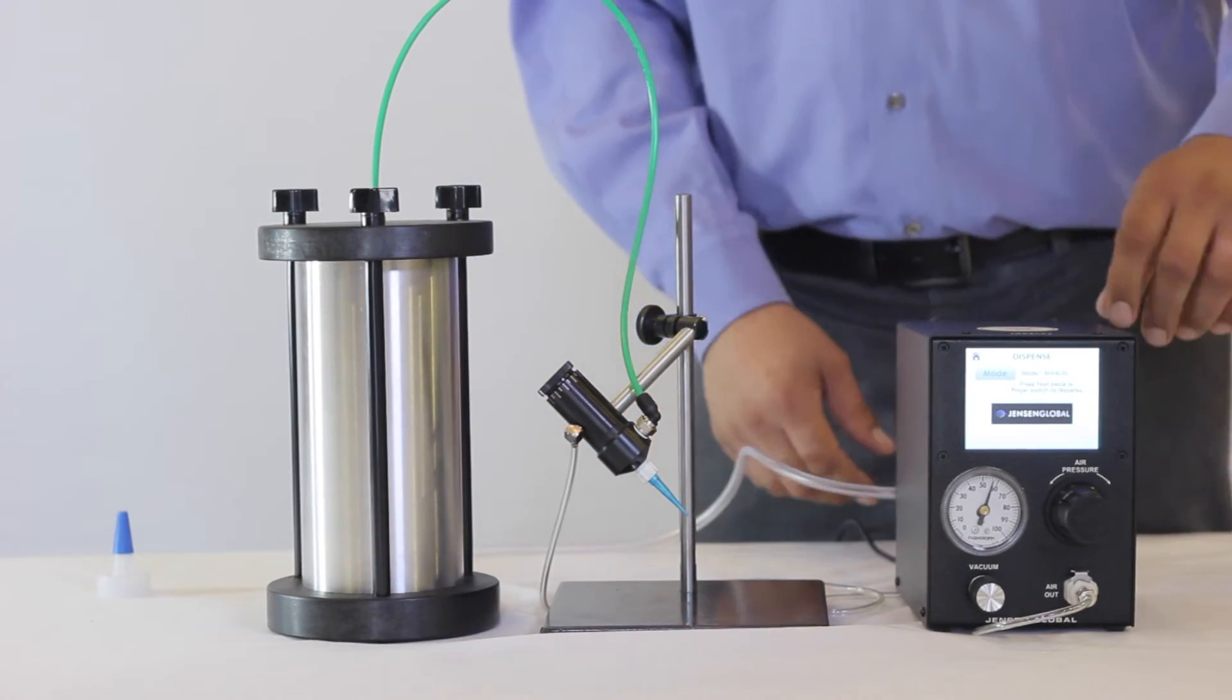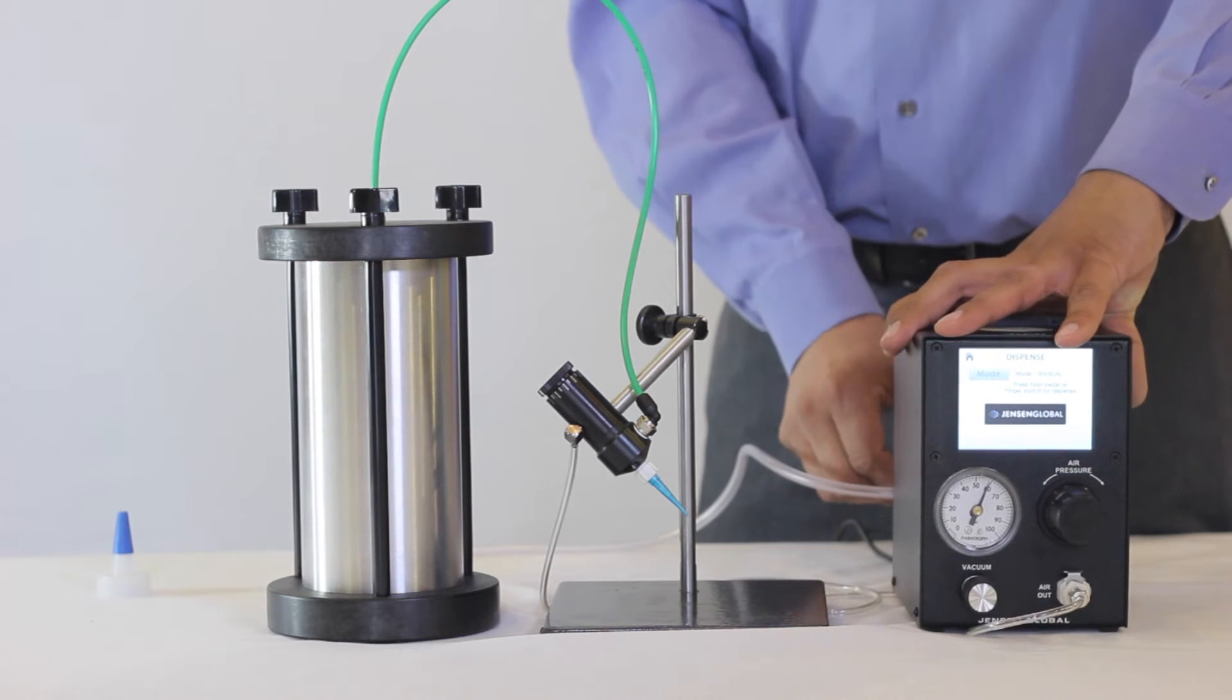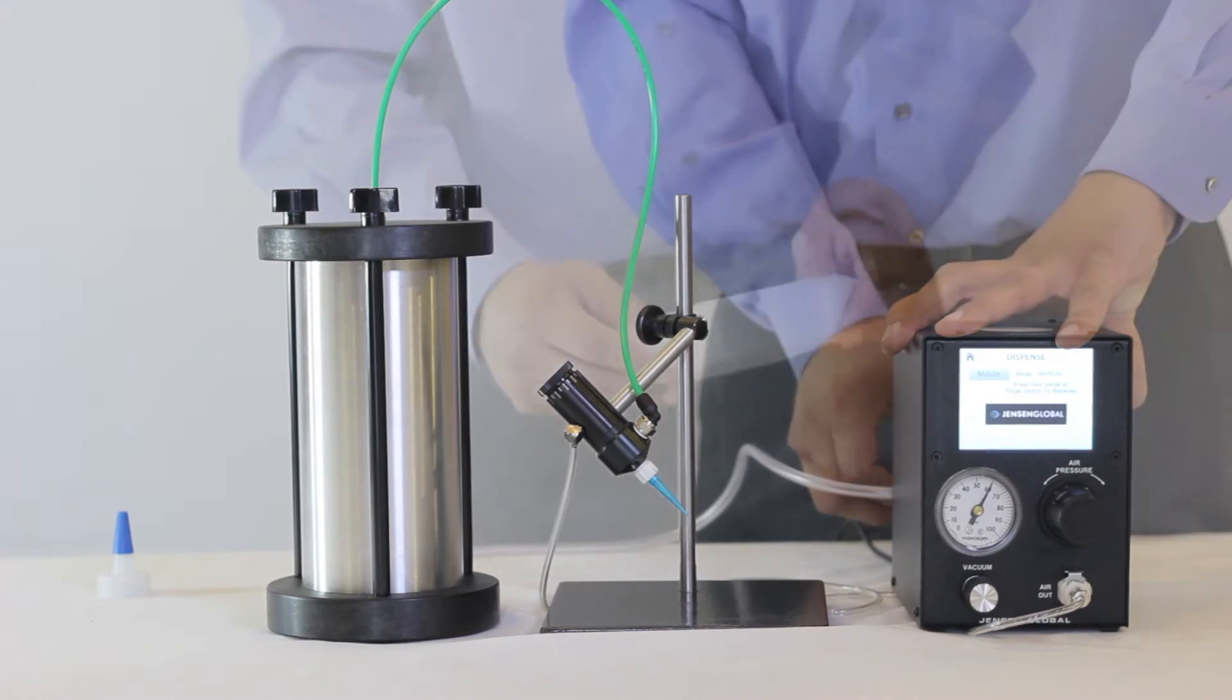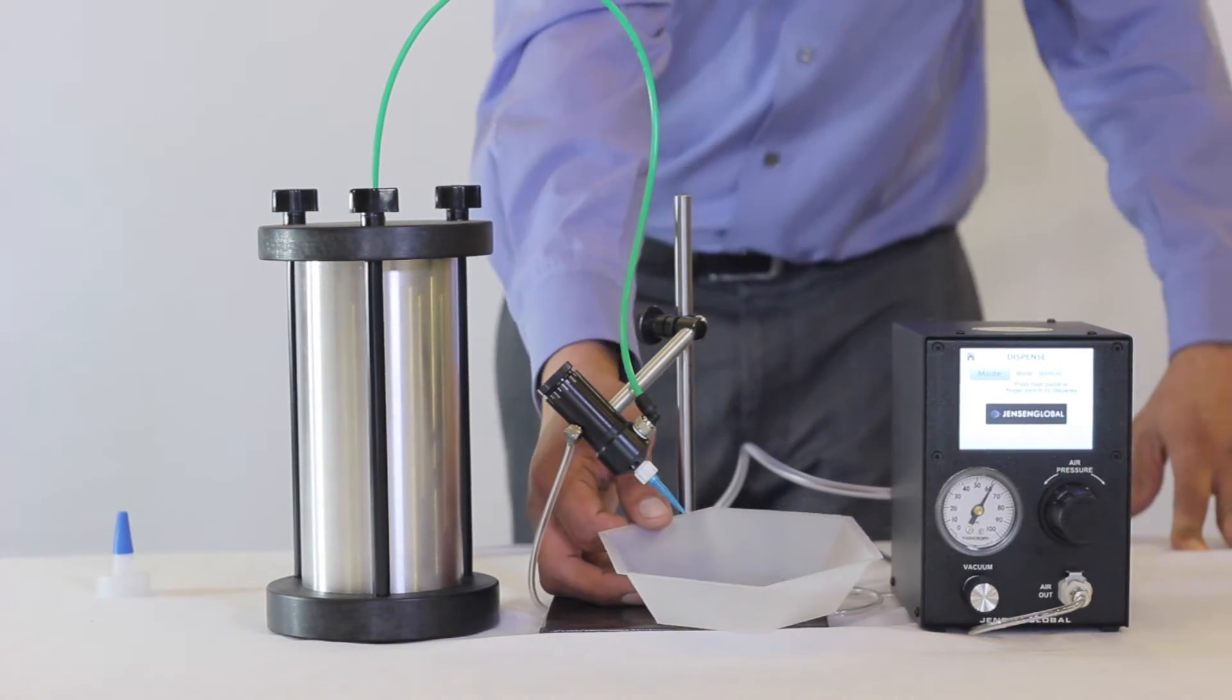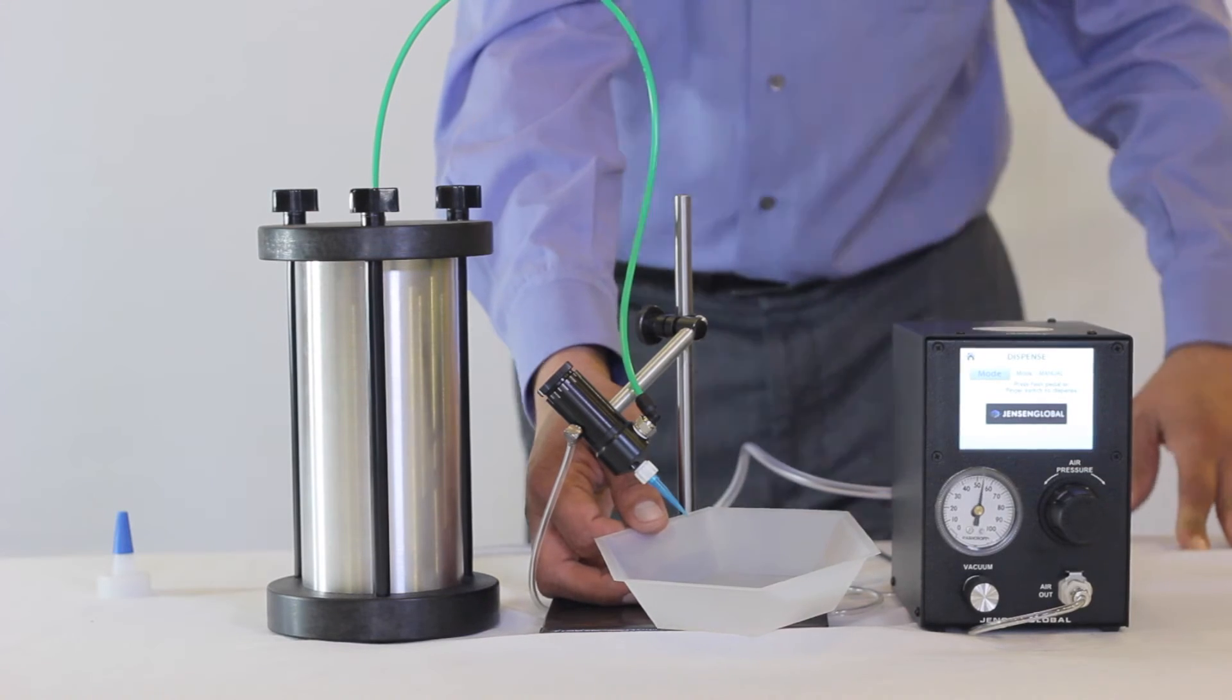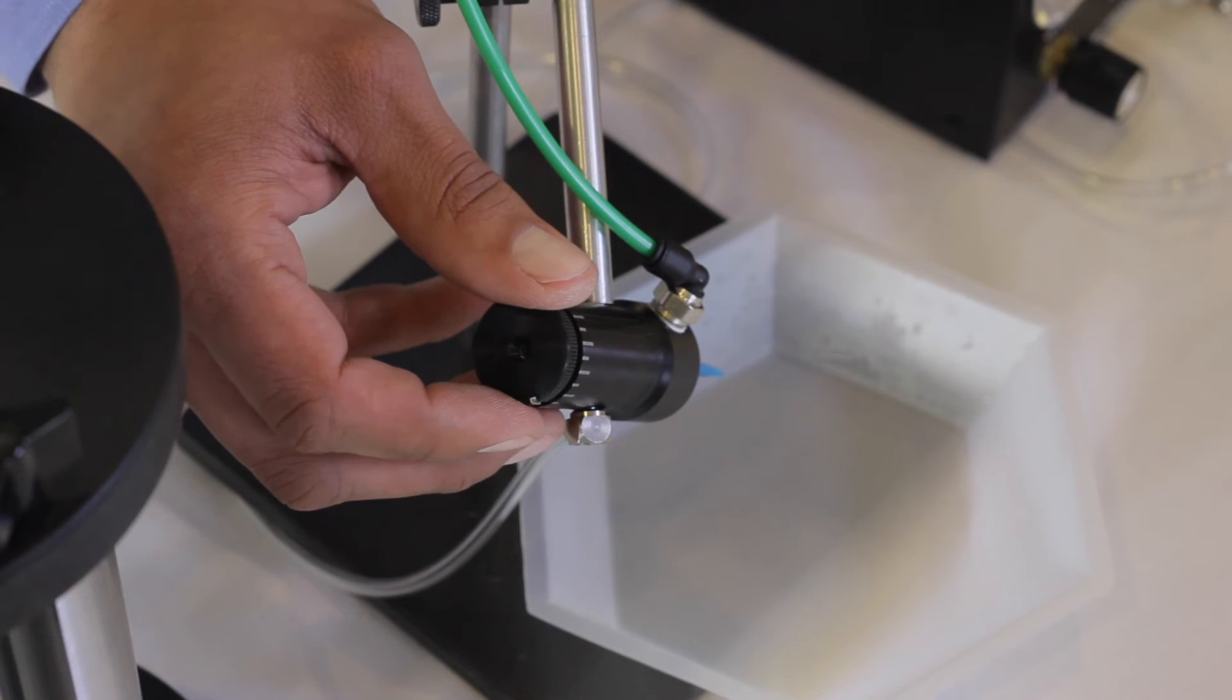To test material flow, start at 5 psi and adjust the pressure as needed. Press the foot pedal and test your flow. To adjust the flow of material, rotate the adjustment knob slightly to the left to open up the valve. Do this until you reach your desired flow rate.